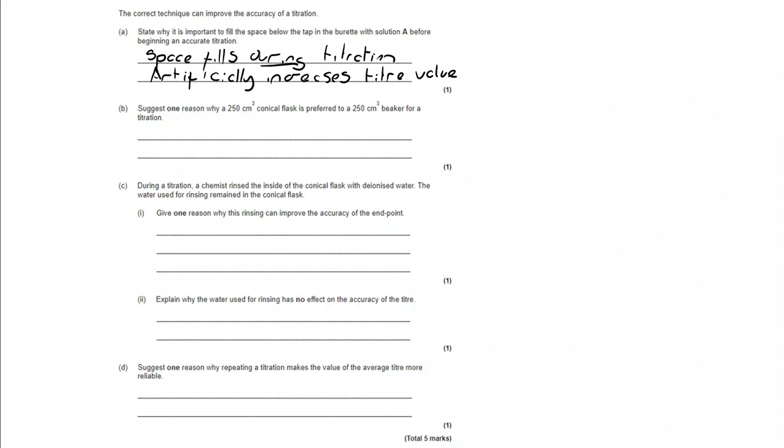Suggest one reason why a 250 cm³ conical flask is preferred to a 250 cm³ beaker for a titration. Entirely practical, think about the shapes of them. A conical flask has less chance of losing volume when you swirl it. It's got that narrower neck.